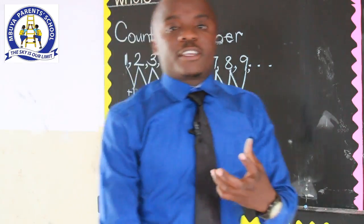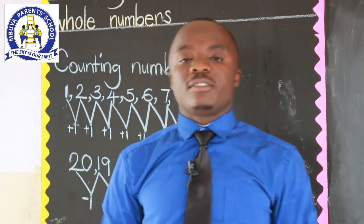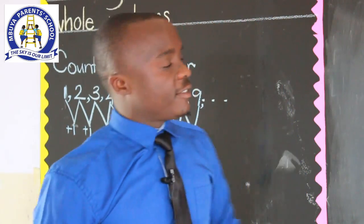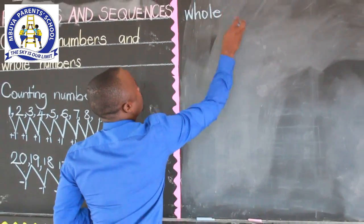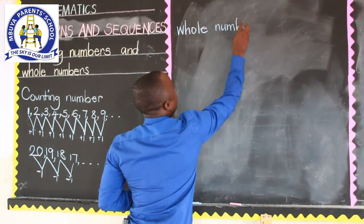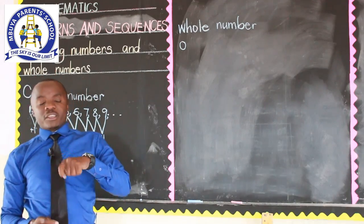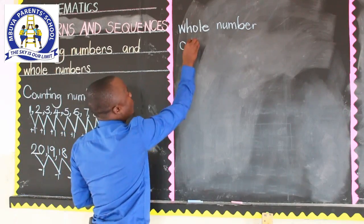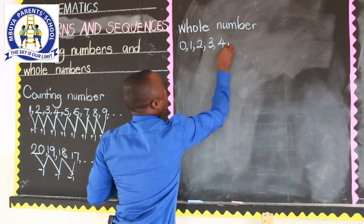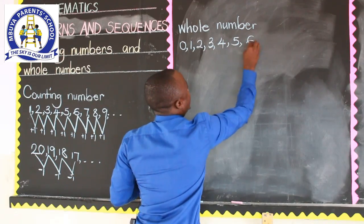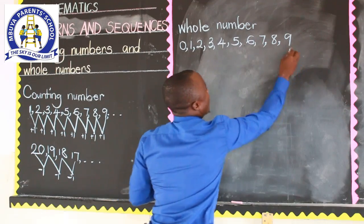When we talk about whole numbers, these are numbers that are not fractions. Our first whole number is zero. From zero, the next one is one, then two, three, four, five, six, seven, eight, nine, maybe ten.